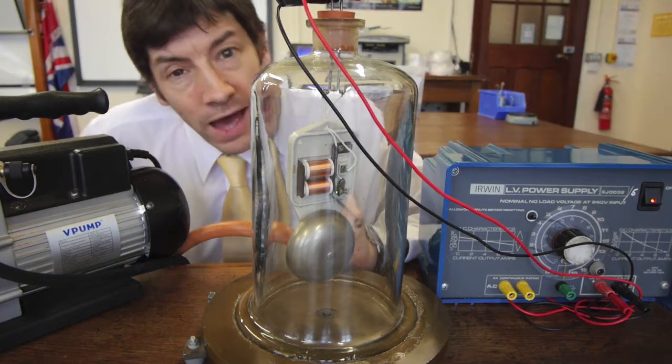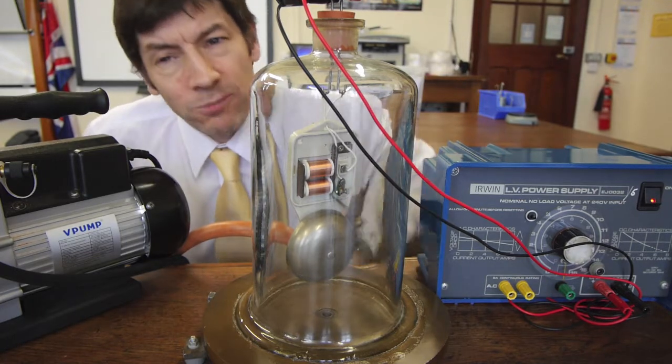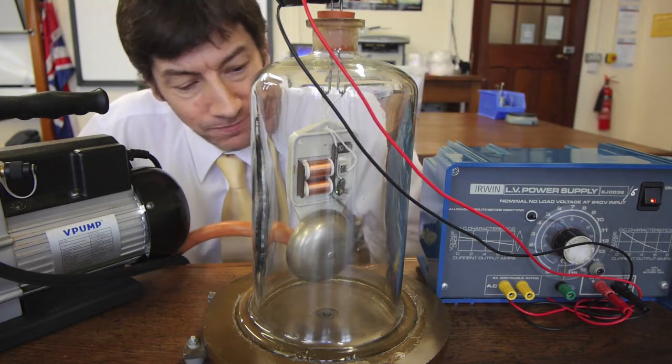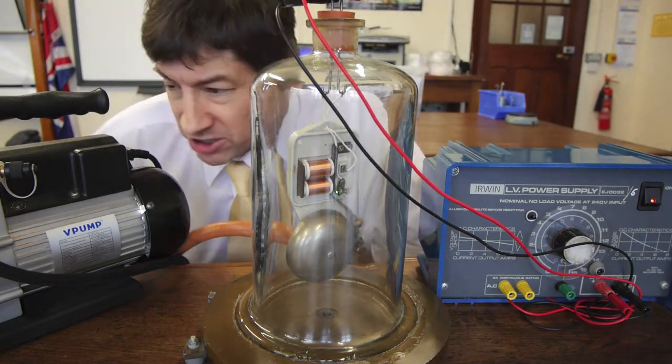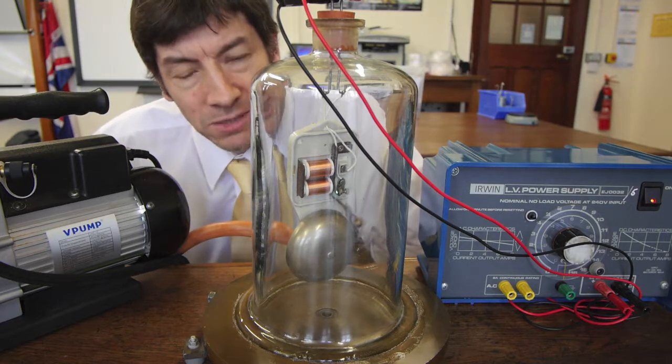Now, this takes a while, but after a while we will have removed most of the air from the bell jar. There's always a tiny bit left because we can't get down to absolutely zero pressure with this vacuum pump, but we can do a reasonably good job.